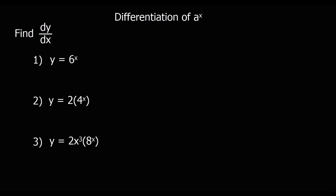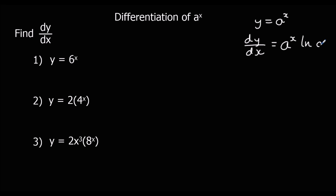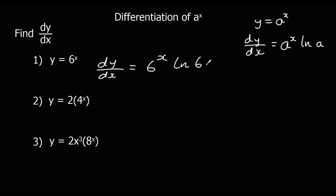Okay, three more questions here — pause the video, give them a go, and then press play when you're ready to go through. For question 1 we've got y equals 6 to the power of x, so dy/dx is 6 to the power of x ln 6.